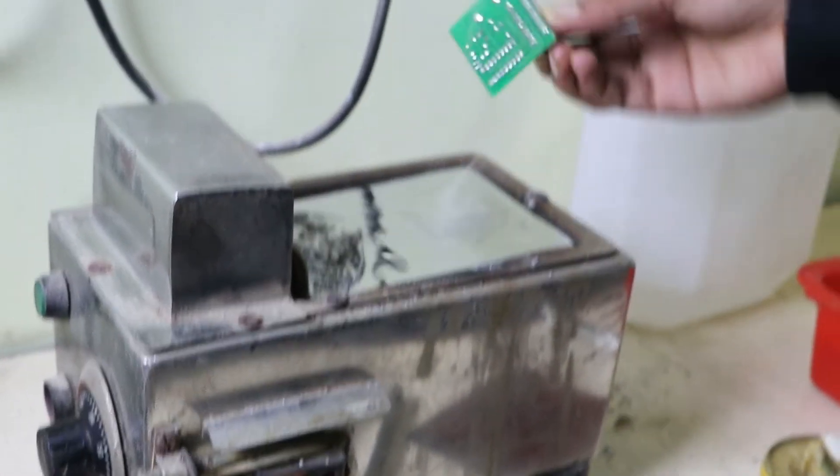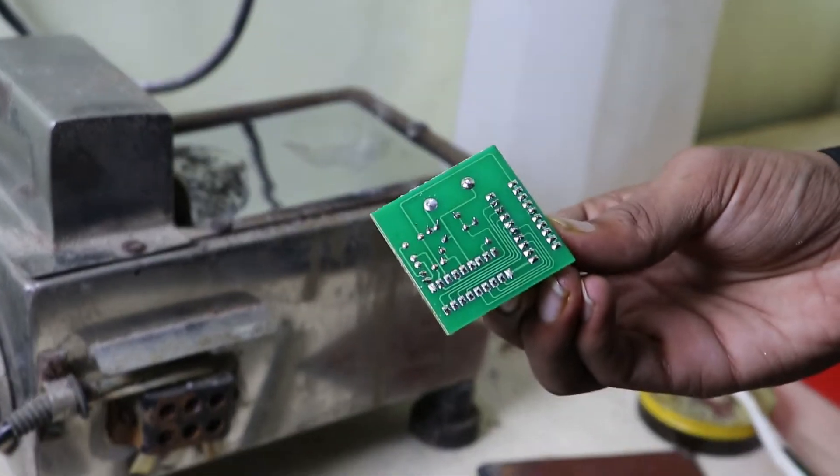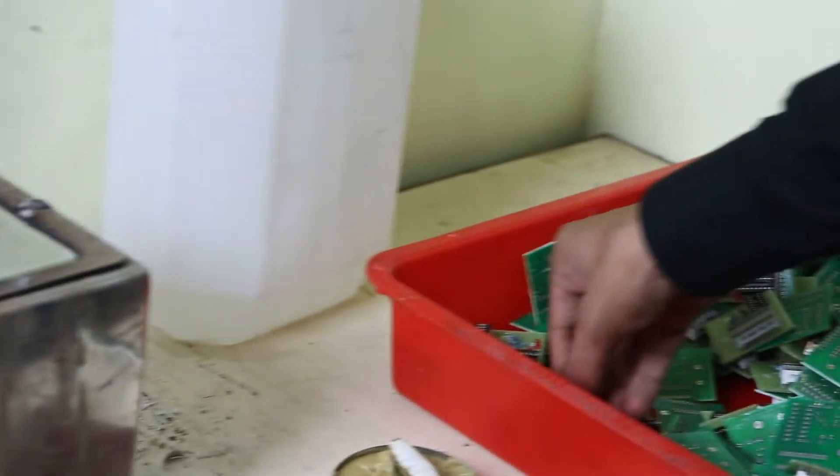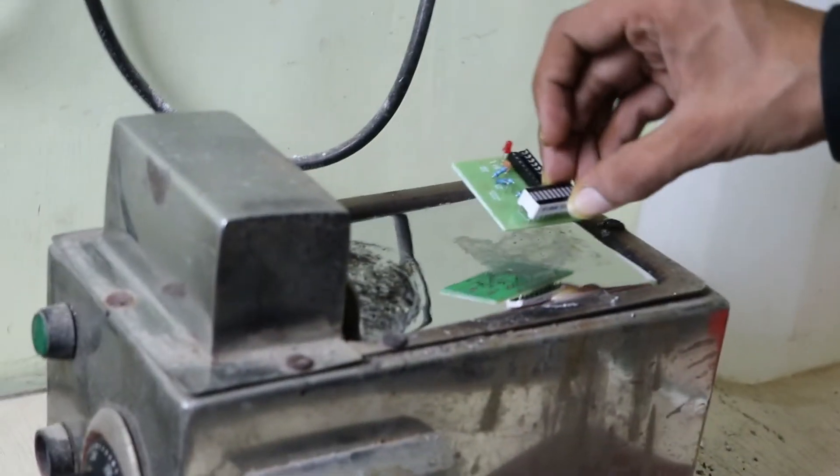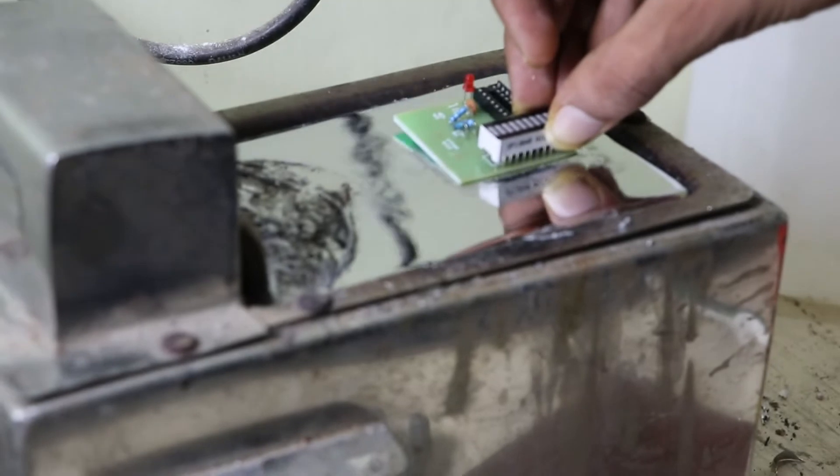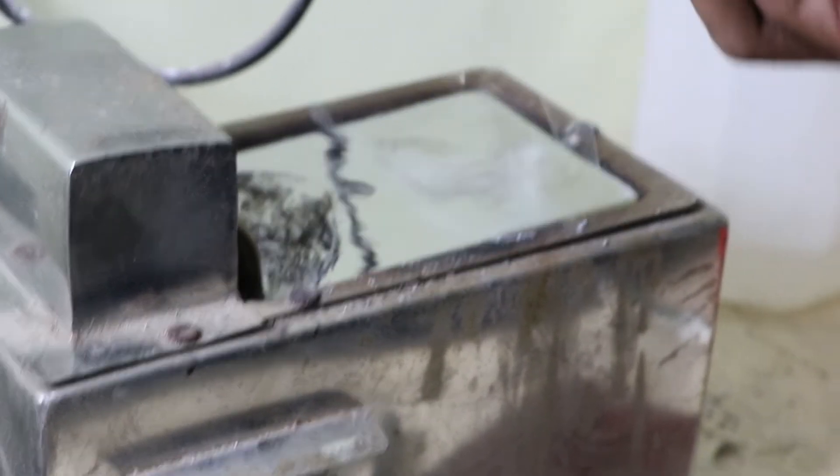You can see I'm making a particular angle when immersing the PCB. The clarity is very clear. Repeat this process every 3 to 4 seconds. This way you can prepare thousands of circuits in one hour.